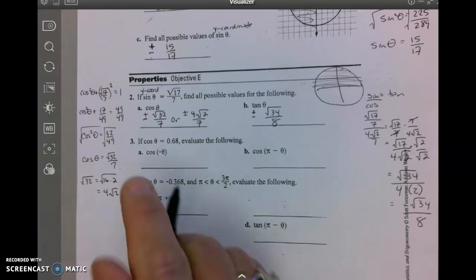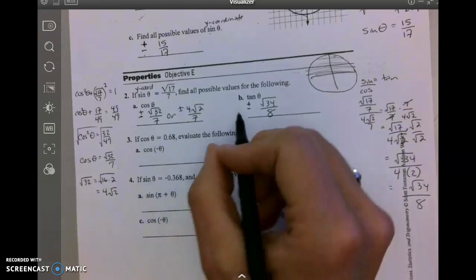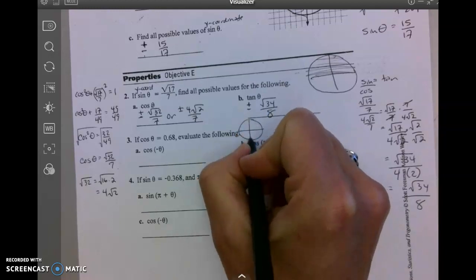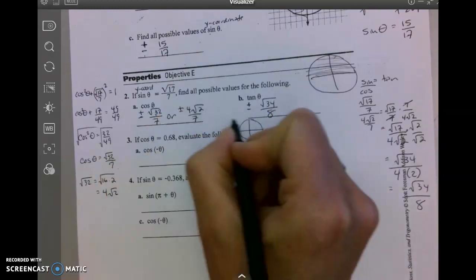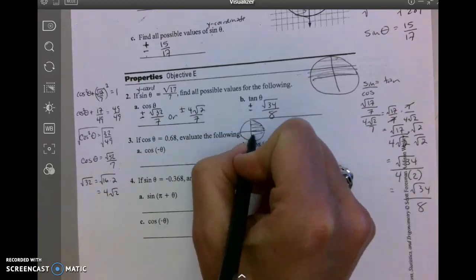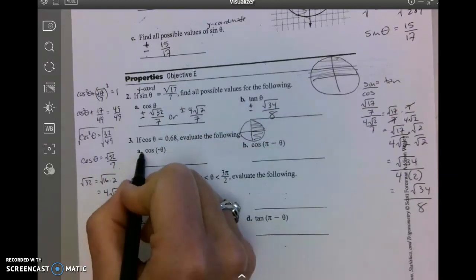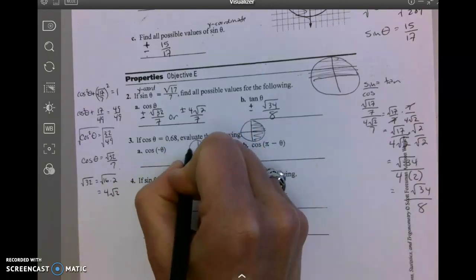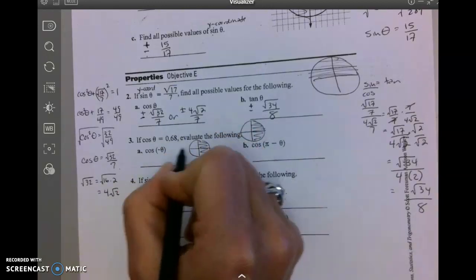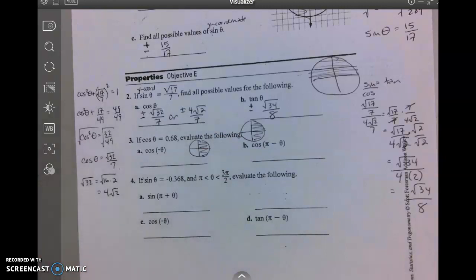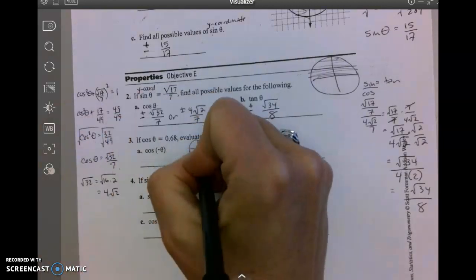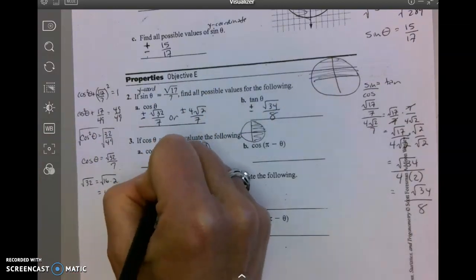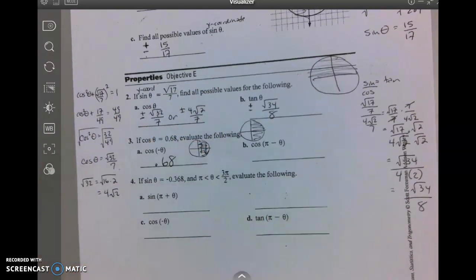Let's go to number 3. Cosine of theta is positive 0.68. Cosine is x, x is positive over here in quadrants one and four. For letter A, let me draw my little picture here. Opposite of theta means move up and down, which means I stay right where I am. So it stays positive 0.68.